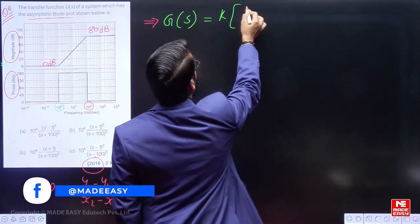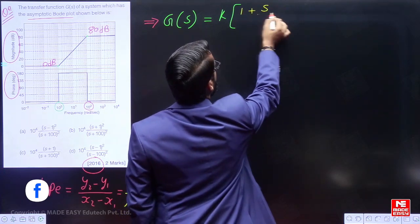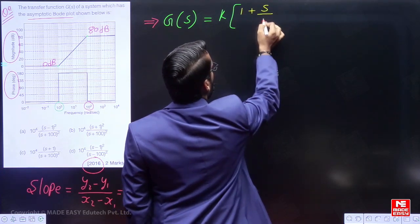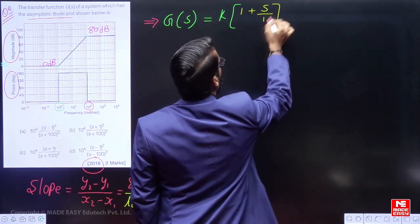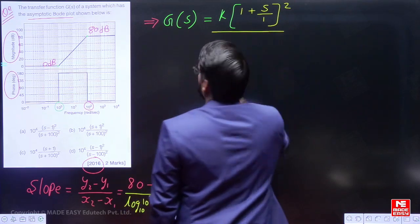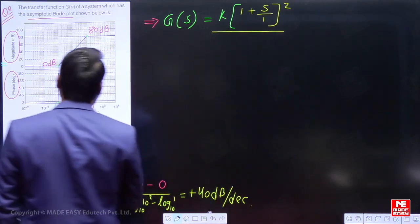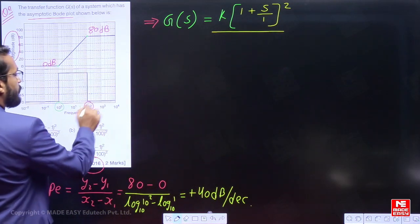So we can say there are 2 zeros with respect to the corner frequency 1. I am writing in the numerator: (1 + s/1)², that is (1 + s) squared.